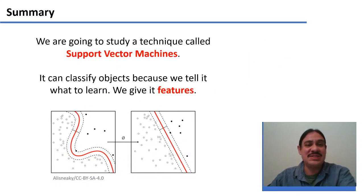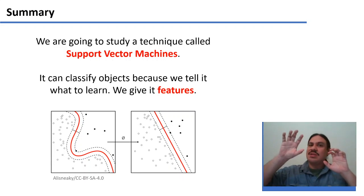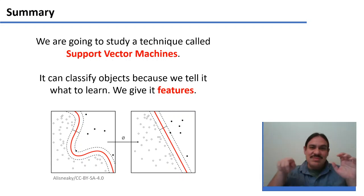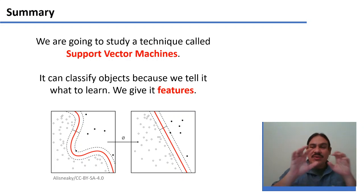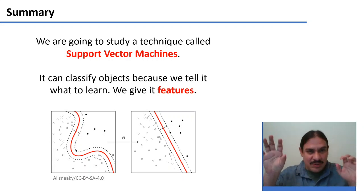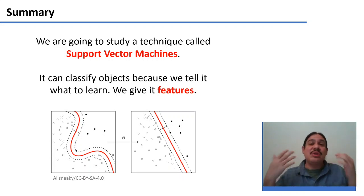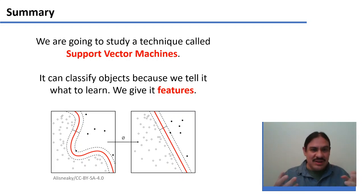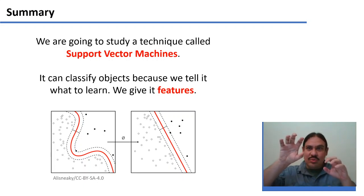So how are support vector machines different? They resemble the clustering algorithms we studied in week three, in that you get clusters of objects in n dimensions — for example, here in two dimensions — and you try to figure out where the clusters are. It is different in that we're going to tell the computer what the clusters are, and then the computer has to figure out what the boundary is between the two groups.